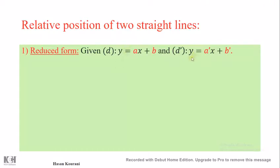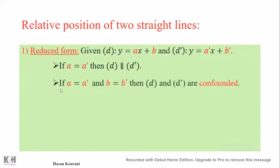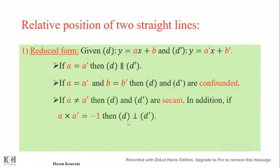In the first case, we are given two straight lines D and D prime whose equations are written in reduced form. If A equals A prime, then D is parallel to D prime. If A equals A prime and B equals B prime, then D and D prime have the same equations and are coincident — they represent the same straight line. If A does not equal A prime, then D and D prime are secant or intersecting. In addition, if A times A prime equals minus 1, then D is perpendicular to D prime.